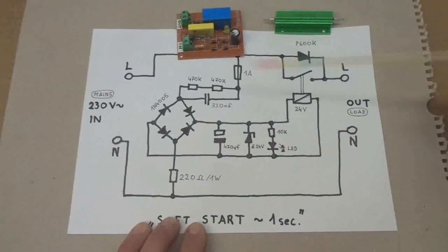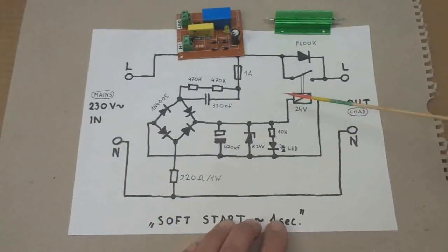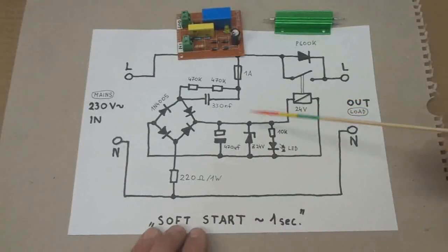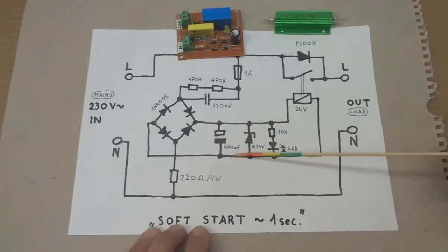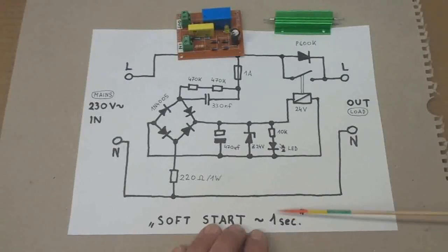The voltage gets kept by a 24 volt zener diode. I have also added a control LED which is not necessary, and the 24 volt feeds the relay coil of this relay, a 24 volt relay. And the charge up of this electrolytic capacitor takes some time, in this case about one second, till the threshold of this relay coil is reached and it closes the relay contact here.